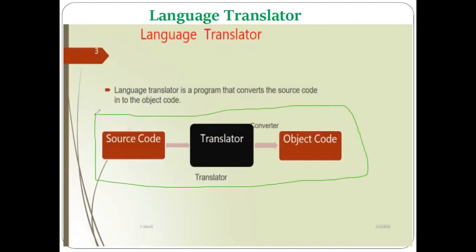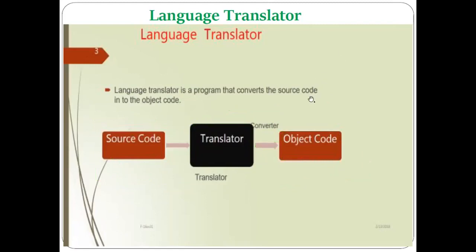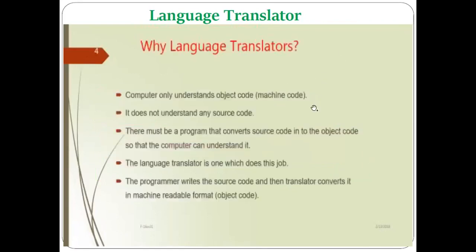Here I have shown you what exactly the language translator does: the input is given to the language translator, and it converts that input into the object code. The source code can be C, C++, Java, or other higher-level languages, and object code is nothing but the machine code which is in the form of zeros and ones.